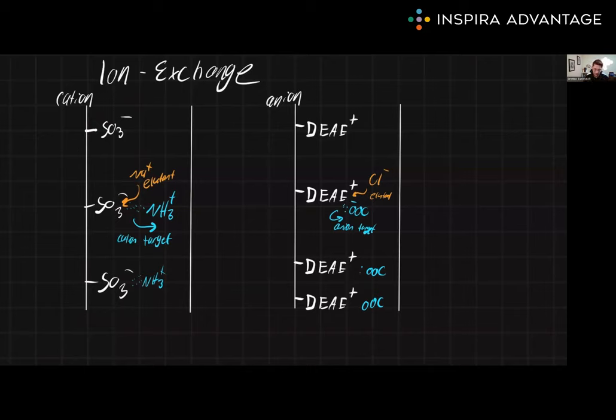On the other hand, we have anion exchange. This is where we're interested in collecting anions. So we have something positively charged stuck to the wall, in this case DEAE, which is positively charged. This will attract negatively charged proteins, which will get stuck to it. And when we want these proteins to leave, we can add something with negative charges, maybe like chlorine, to come down and displace those proteins.